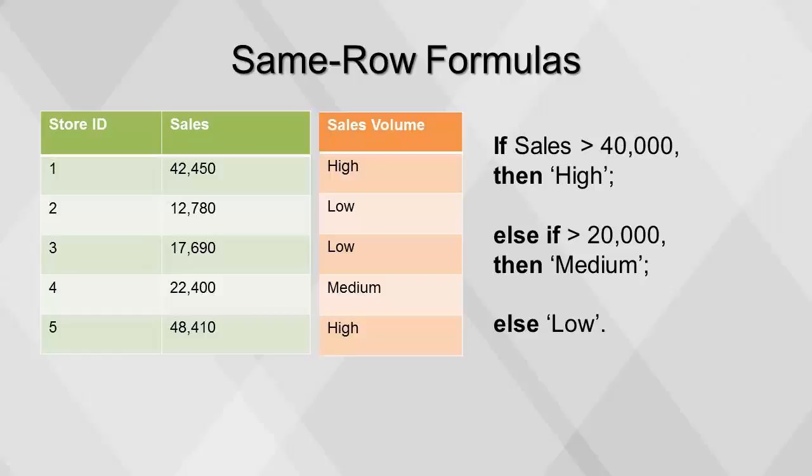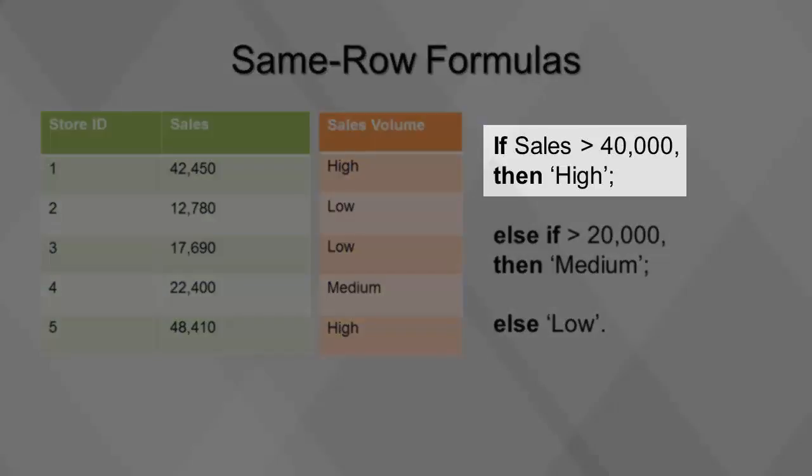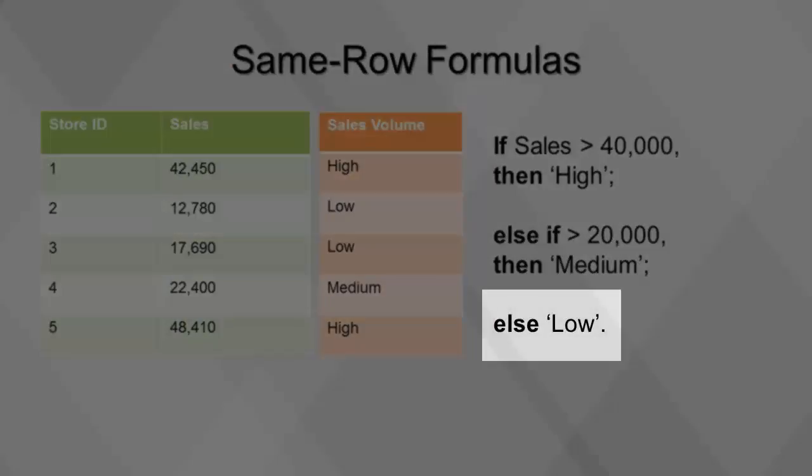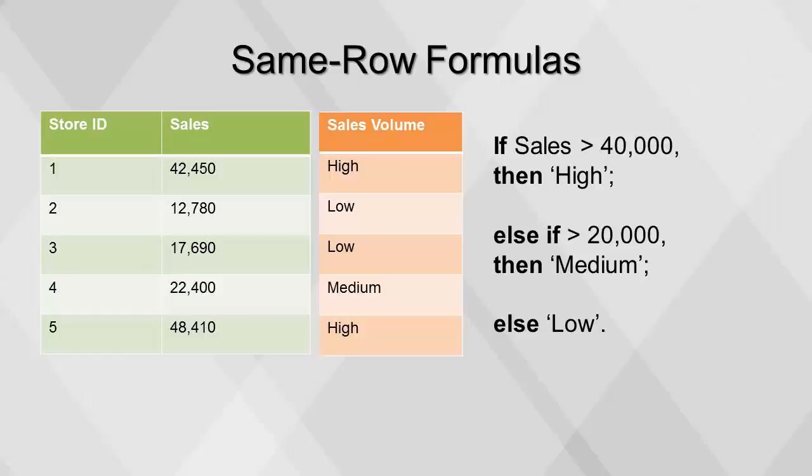In this table, we compute sales volume with if-then logic. If sales is greater than 40,000, then high. Else if sales is greater than 20,000, then medium. Else low. This formula begins with testing the first condition, if sales is greater than 40,000, and if it is true, the first outcome, high, will be assigned. The second condition, else if less than 20,000, is evaluated only if the first condition is false. If the second condition is true, the second outcome, medium, will be assigned. If neither the first nor second conditions are true, then the final outcome, low, will be assigned.